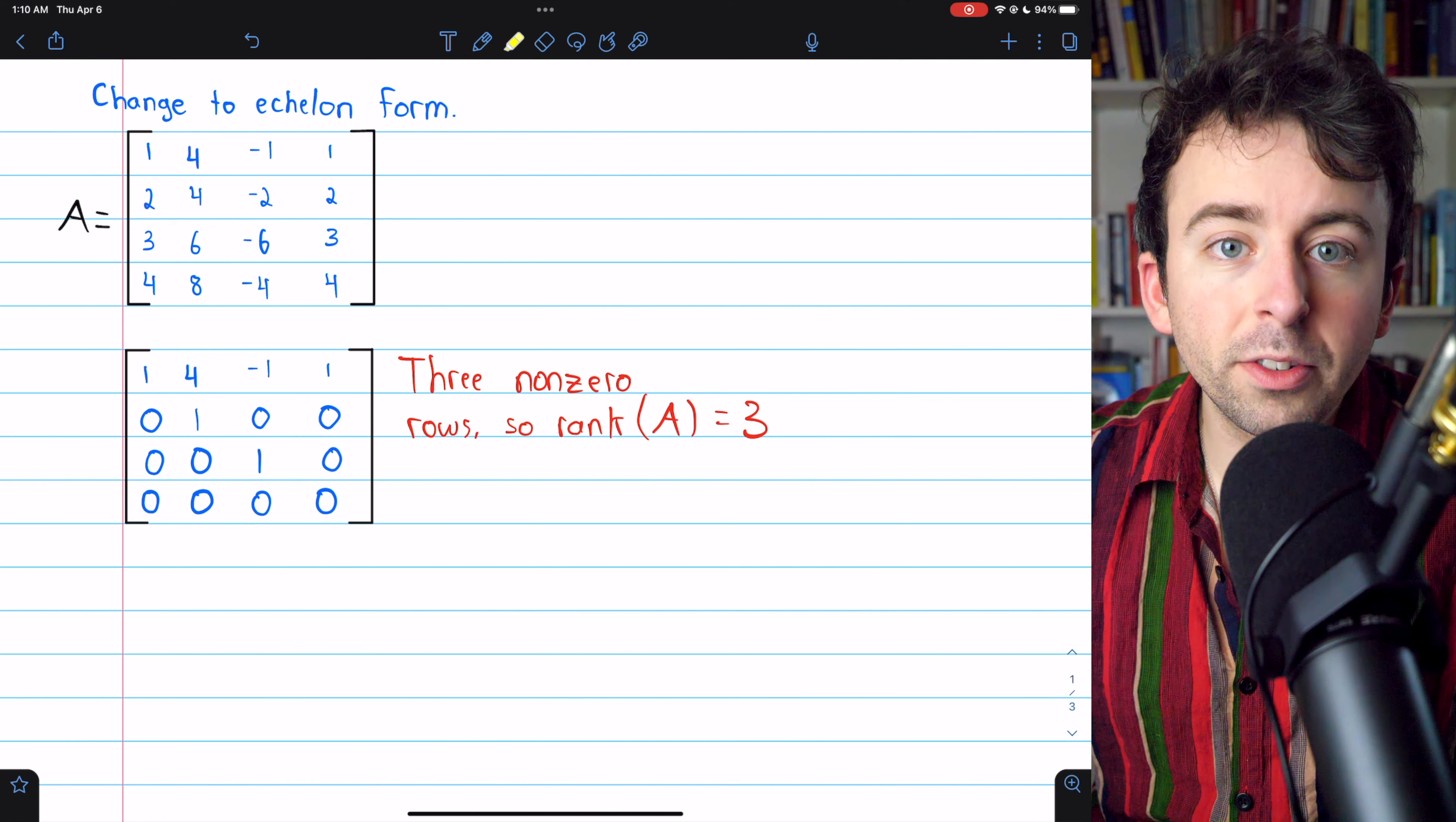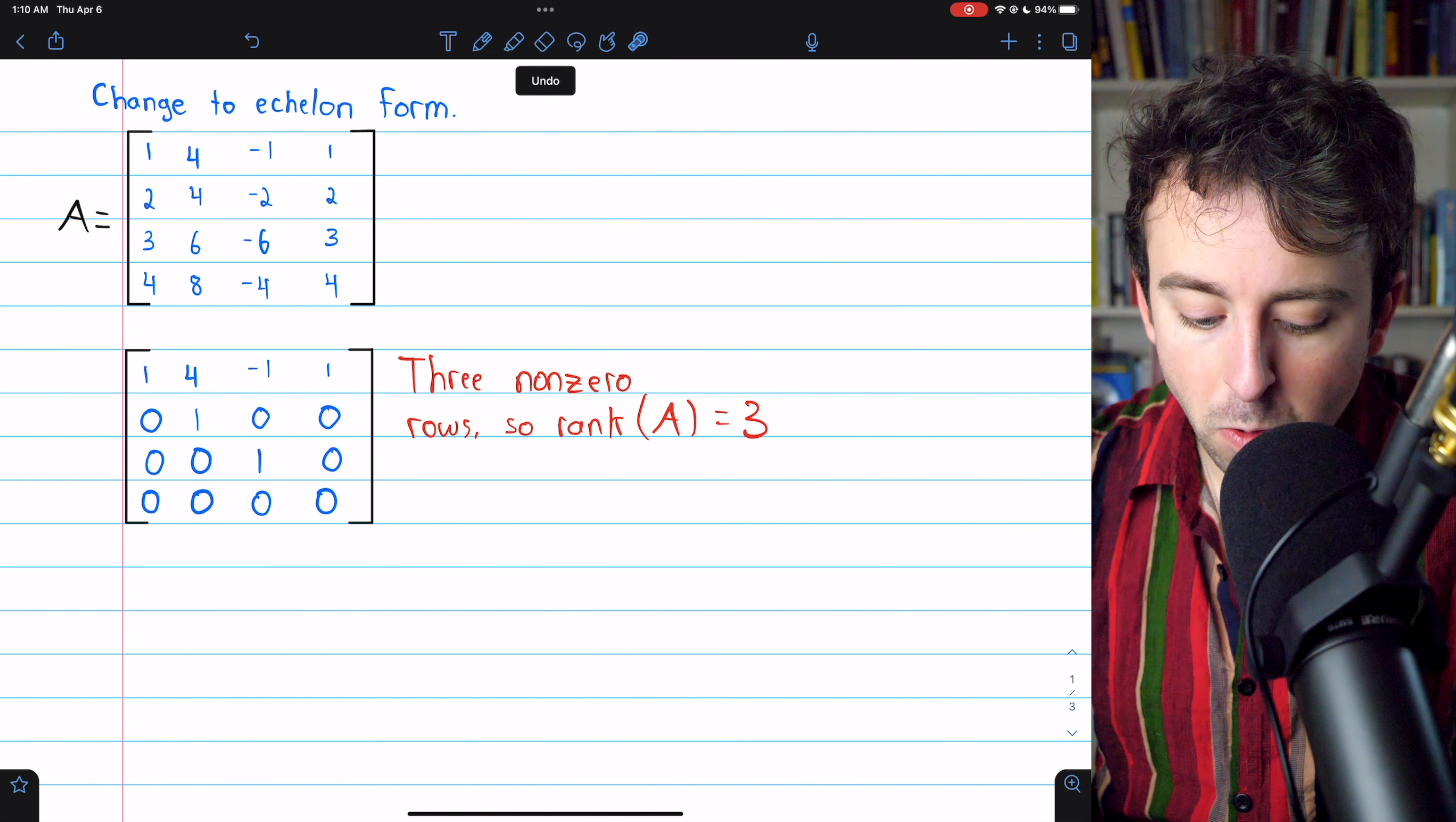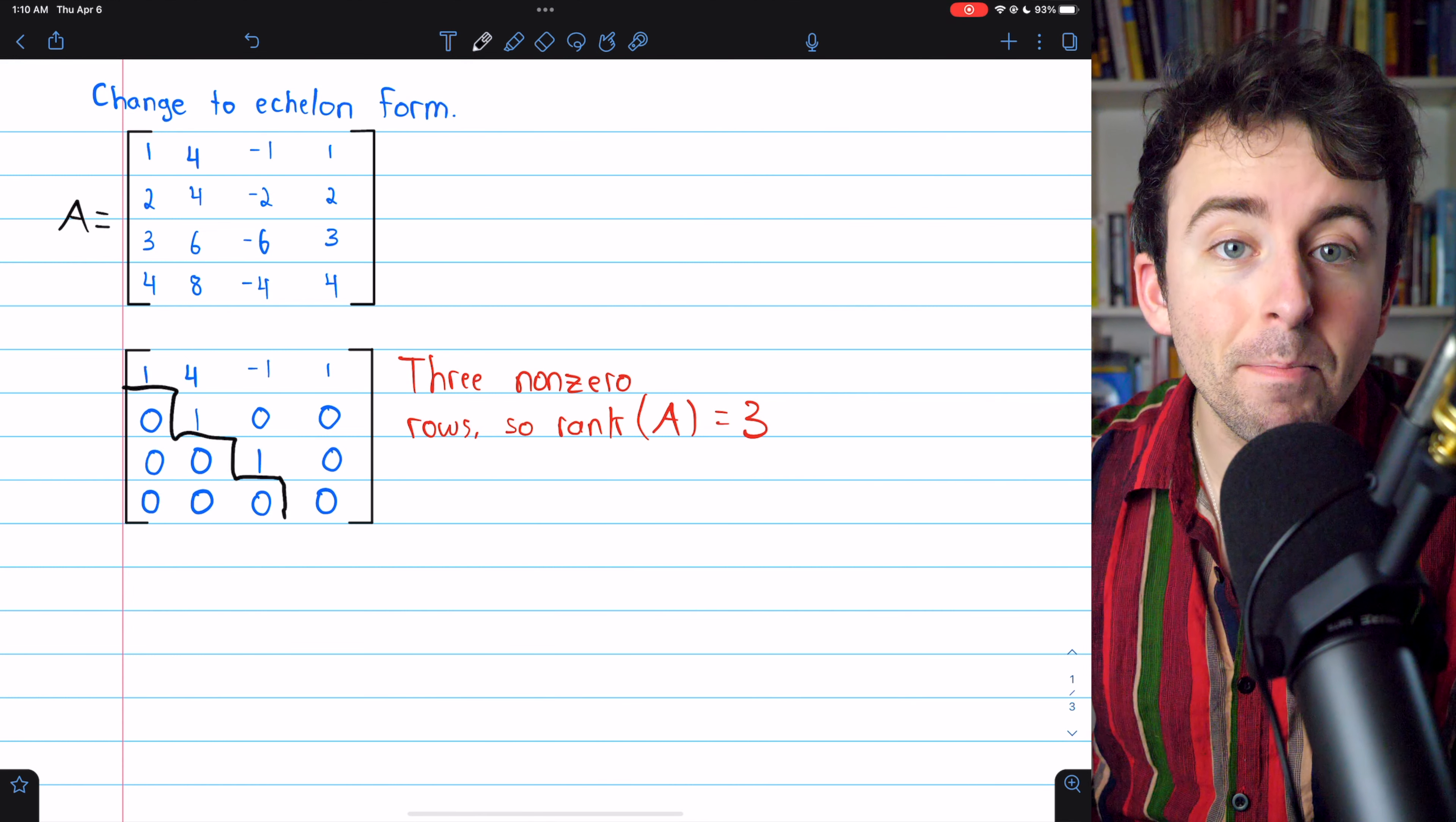Row echelon form, of course, means that all zero rows are moved to the bottom of the matrix. All non-zero rows have leading entries of one and are assembled in this sort of staircase pattern.